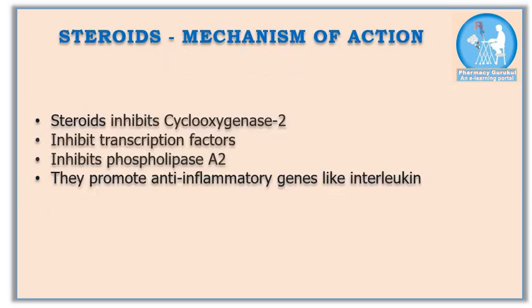The important point you need to know is how corticosteroids downgrade your immune system, and for that you need to understand the mechanism of action of corticosteroids. Corticosteroids inhibit cyclooxygenase-2, which leads to a reduction in the migration of leukocytes to inflammatory sites. They also inhibit transcription factors including macrophages, lymphocytes, mast cells and dendritic cells, and inhibit phospholipase A2, which is responsible for the production of numerous inflammatory mediators. They also promote anti-inflammatory genes like interleukin. Since corticosteroids prevent the migration of leukocytes — also known as white blood cells, the cells of the immune system involved in protecting the body against infectious disease and foreign invaders — the blockage of WBCs results in a weakened immune system.